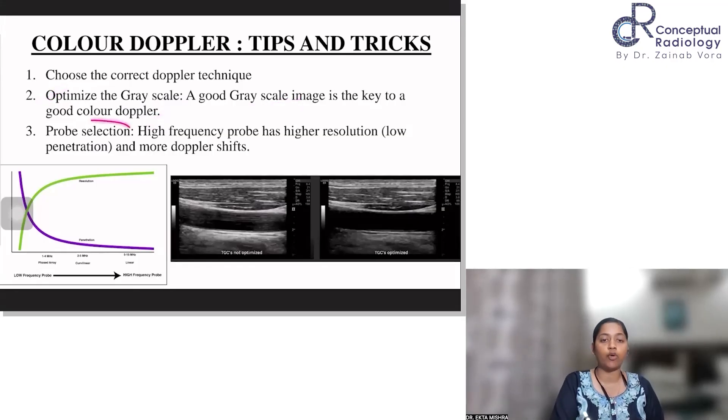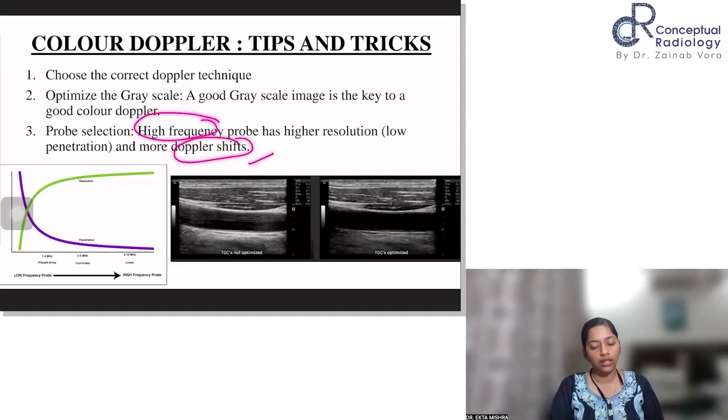So starting with probe selection. You have a high frequency probe and a curvilinear low frequency probe. Higher frequency probes have relatively higher resolution and therefore they have low penetration because the sound waves get attenuated. So due to their high frequency, they have more Doppler shifts and better Doppler ultrasound. As the penetration decreases, your resolution improves. But these are inversely related. So low frequency probes have higher penetration but poor resolution and vice versa.